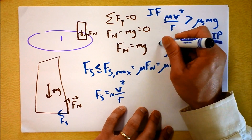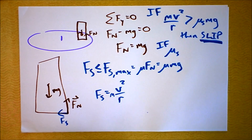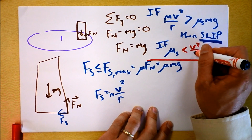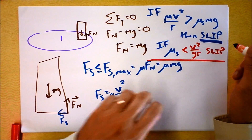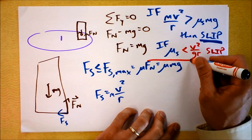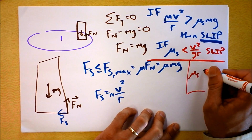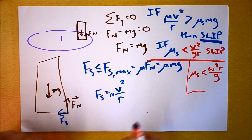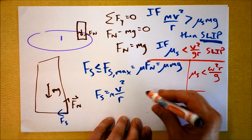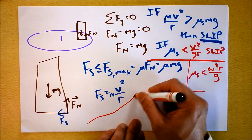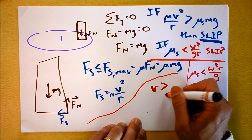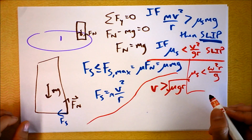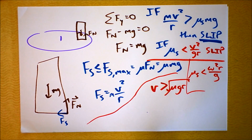So if μ_s is less than v²/(gr), then we'll have slippage. I could also substitute in omega: if μ_s is less than ω²r/g. We could even solve for velocity: velocity is greater than the square root of mu times g times r — I pronounce this the 'scrute of mu-ger', which is really fun to say. Build a video game around the scrute of mu-ger.